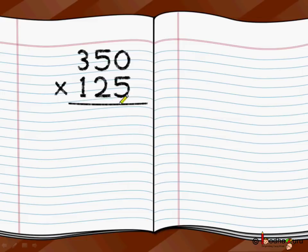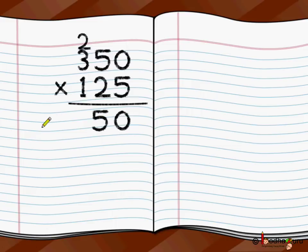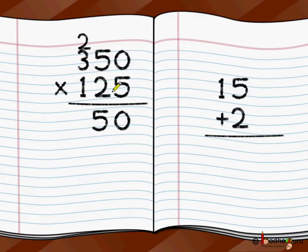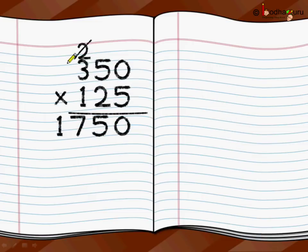First we start with the ones place of the multiplier. So first we multiply 5 by 350, starting from the first digit of the multiplicand. So we do 5 multiplied by 0, which is 0. 5 multiplied by 5 is 25, so 5 is written here and 2 goes as carry over. 5 multiplied by 3 is 15, plus 2 carry over is 17. So 350 multiplied by 5 is 1750.